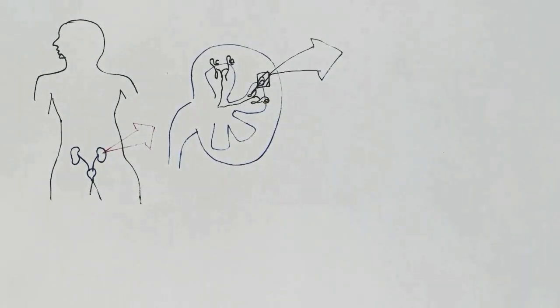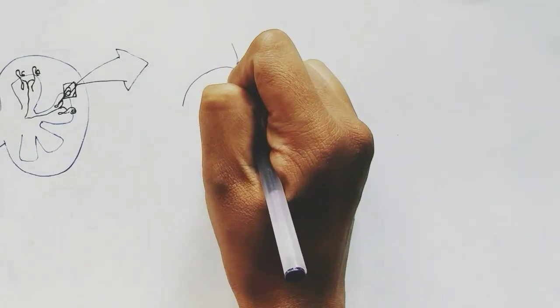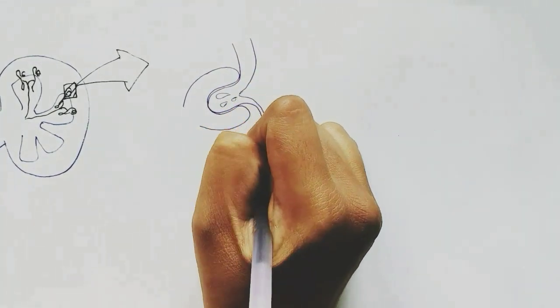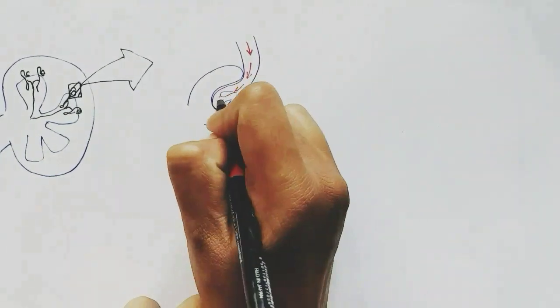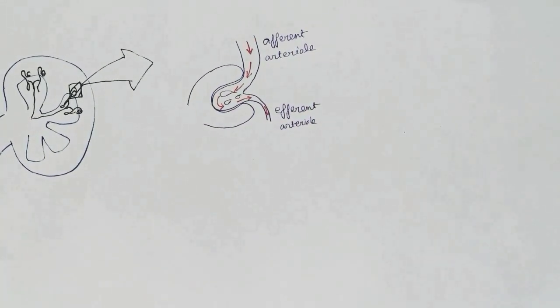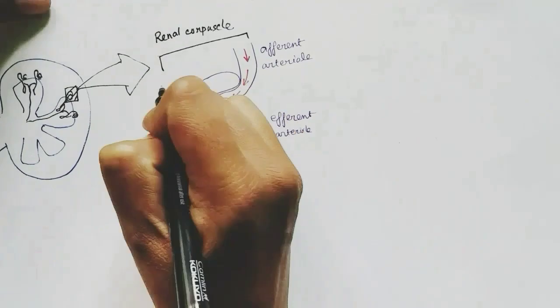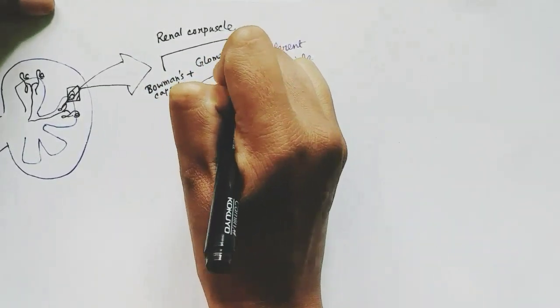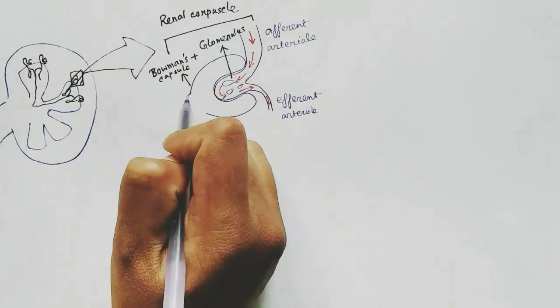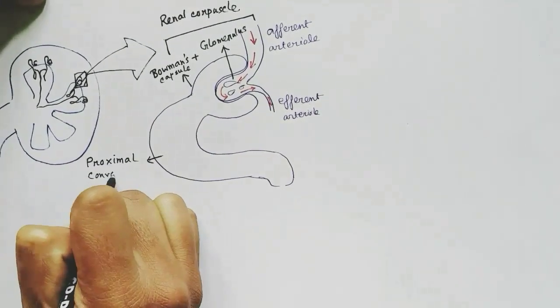Now if we zoom into each nephron, I'll talk about a brief physiology of nephron to understand the histology better. This is the head of the nephron. The afferent arteriole comes in, which is broader than the efferent arteriole, which is narrower. The blood flows through it and gets filtered in the head of the nephron. This whole region is called the renal corpuscle — this region is the Bowman's capsule, and the blood vessel region is the glomerulus.